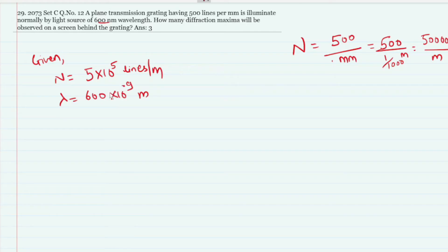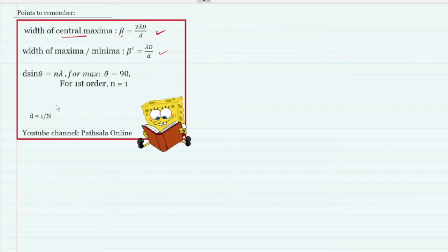How many diffraction maxima will be observed on the screen behind the grating? We will use the formula d sin θ = n λ, where d = 1/N. Substituting gives (1/N) sin θ = n λ. This is the grating equation we use to find small n.